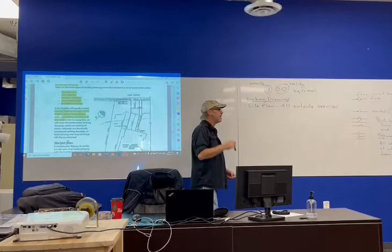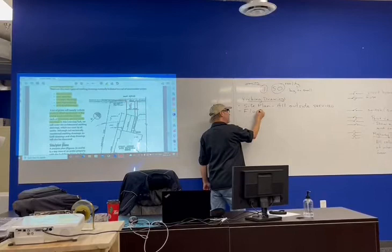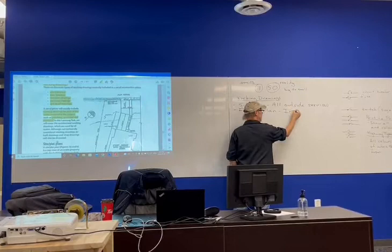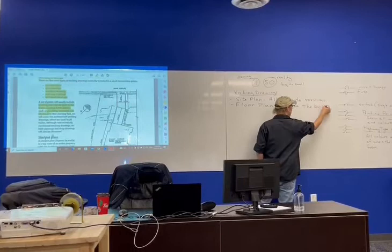The next step we're going to work off mainly is called the floor plan. Now the floor plan deals with what's inside the building. They usually don't show us anything like parking lot lights or anything on the floor plan.